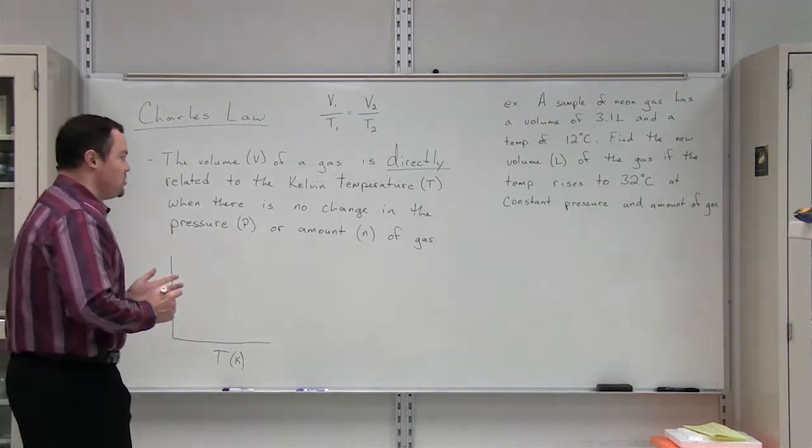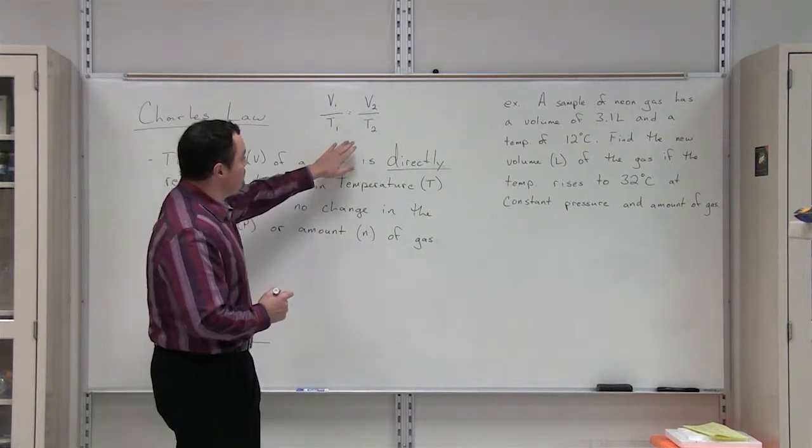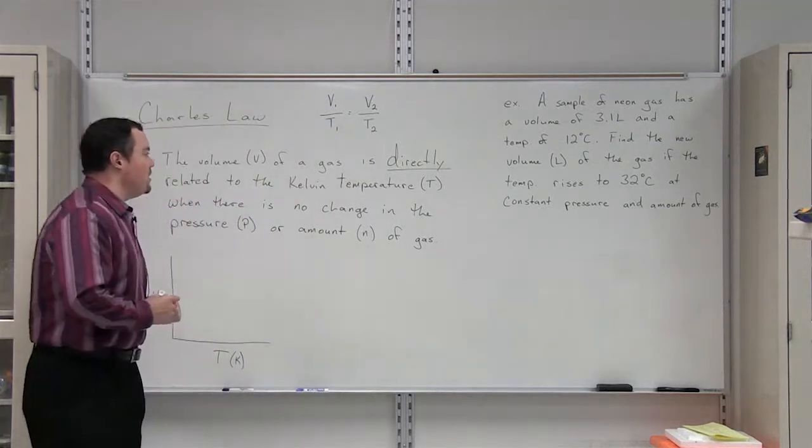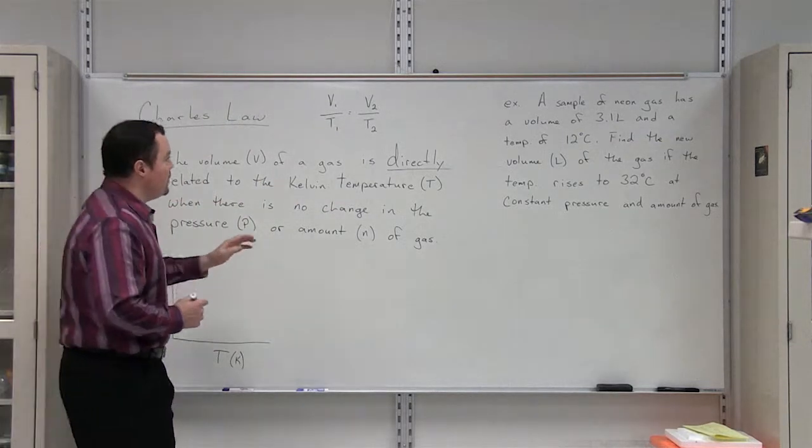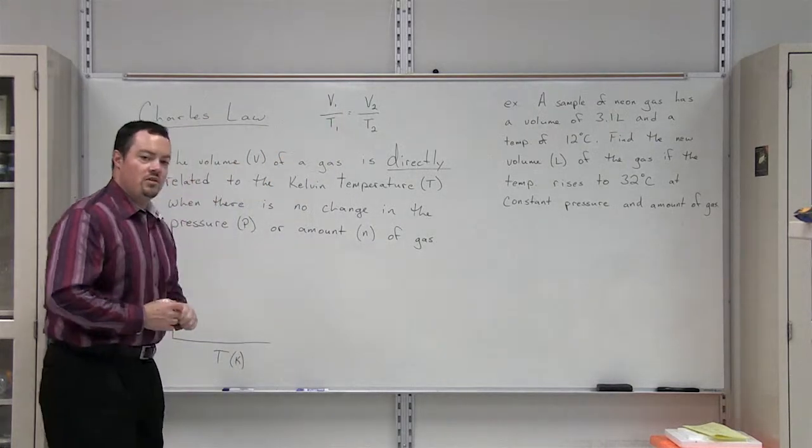Charles' Law looks at the relationship between volume and temperature of a gas. As you can see here, the equation for Charles' Law is V1 over T1 is equal to V2 over T2.